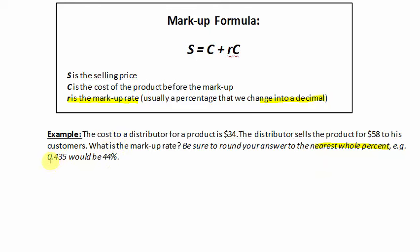In other words, 0.435 would be 44%. So the cost in which the distributor purchased the product was $34, but when he put the product on his shelves and customers started to purchase it, he sold it for $58.